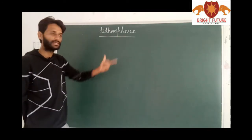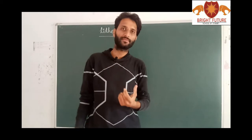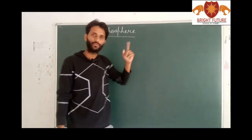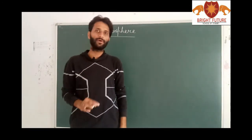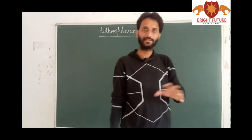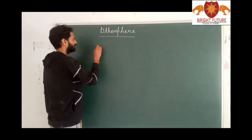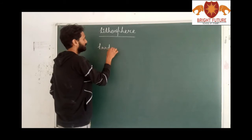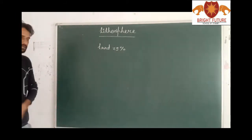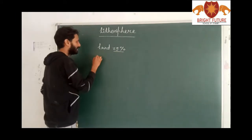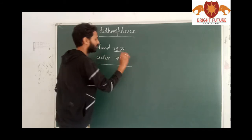Let's talk about lithosphere in detail. Lithosphere is one of the three major domains of the earth. The surface of the earth is made up of land and water. Land covers 29% of the area of the earth.